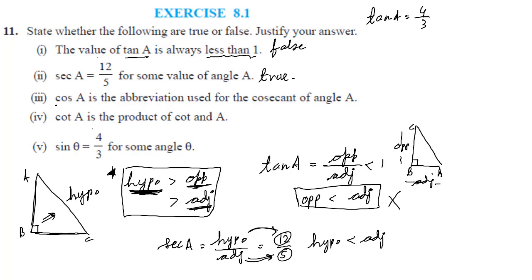Now third part. Third part is cos A is abbreviation used for cosecant of angle A. No, it is not cos A. It is cosec A. Cosec of angle A. So that is cosec A. What is the name for cos? Cos is nothing but its name is cosine of angle A. Cosecant is cosec A.